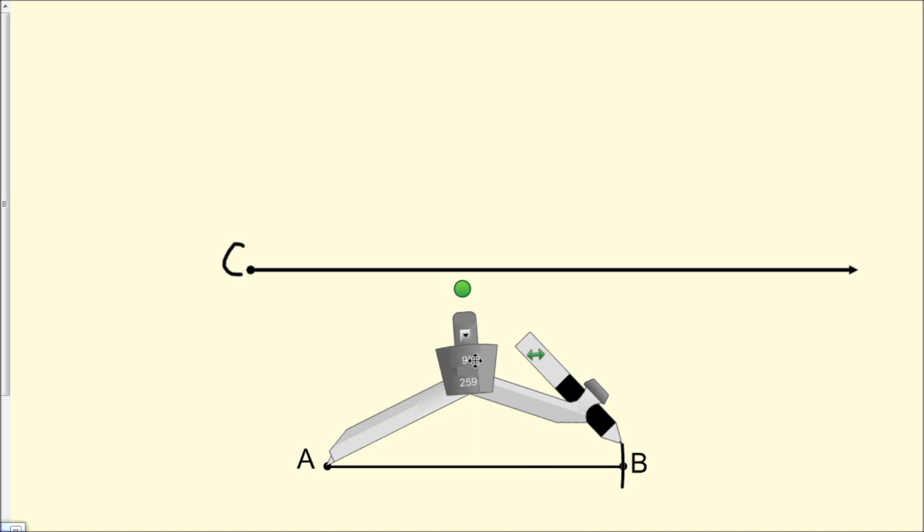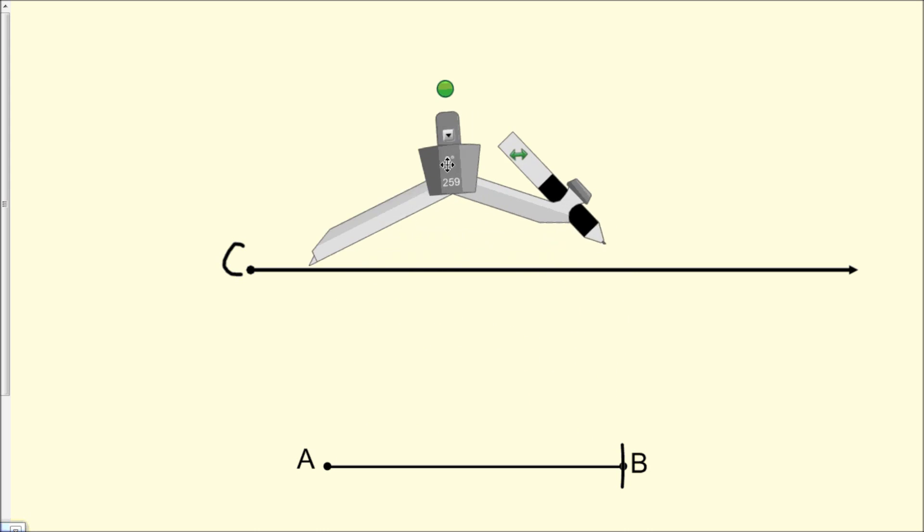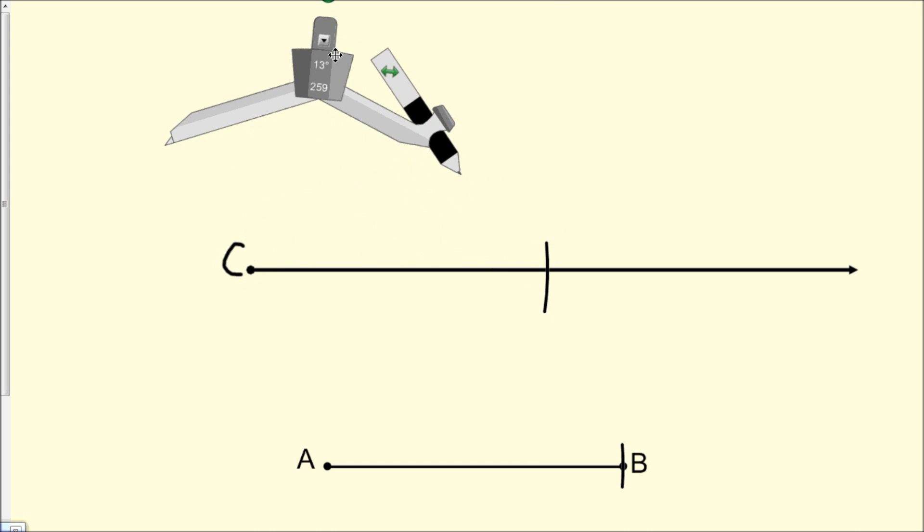So now what we're going to do next, we're going to set the fixed end of the compass on point C, and we're going to sketch an arc until this arc intersects our reference line. And now what we can do is we're going to label this intersection point. We'll call it point D.